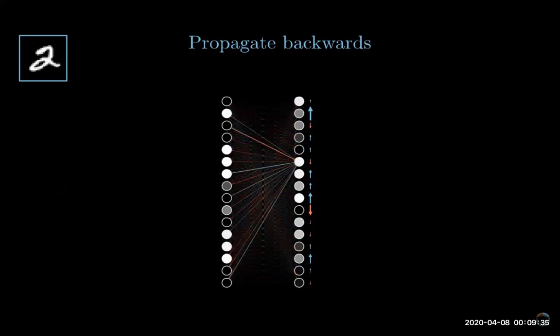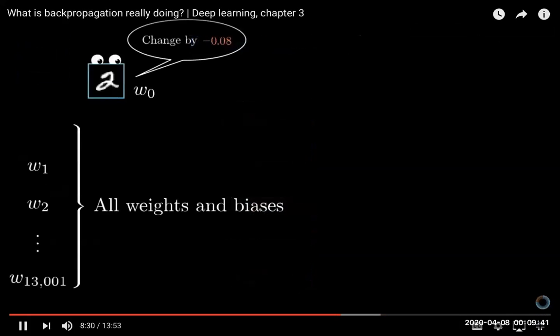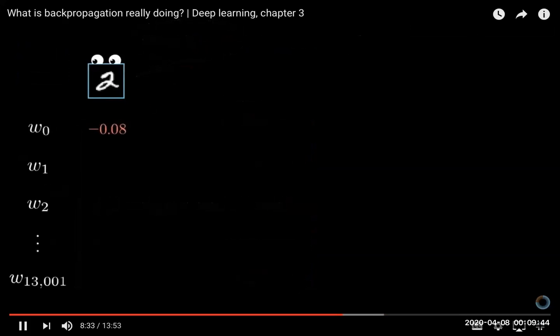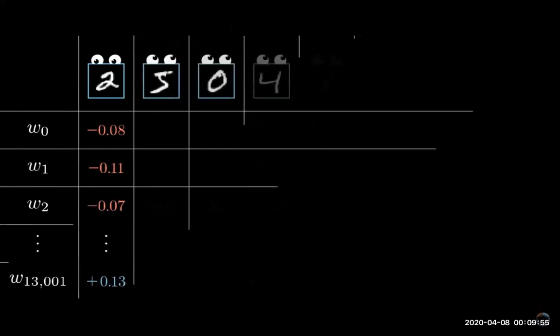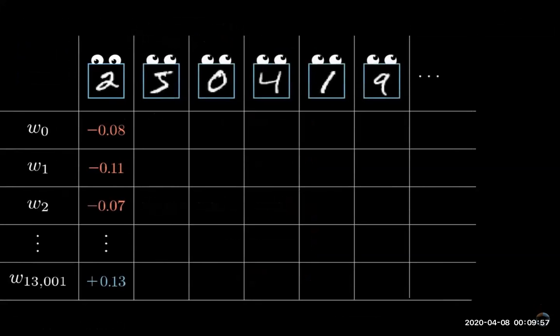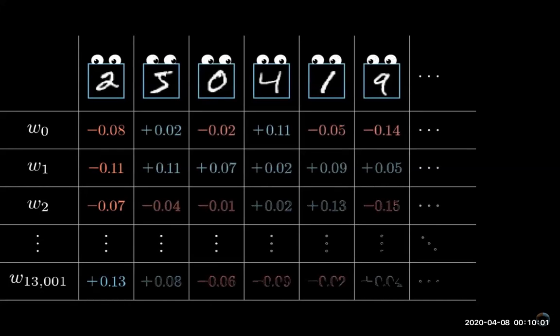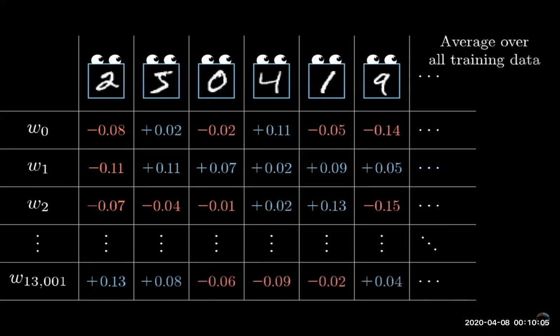Zooming out a bit further, remember that this is all just how a single training example wishes to nudge each one of those weights and biases. If we only listen to what that two wanted, the network would ultimately be incentivized just to classify all images as a two. So what you do is you go through this same backdrop routine for every other training example, recording how each of them would like to change the weights and the biases, and you average together those desired changes.